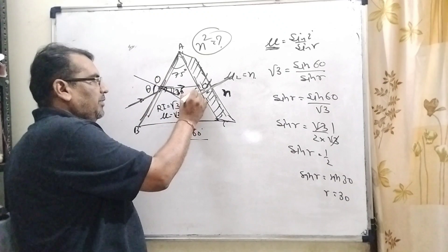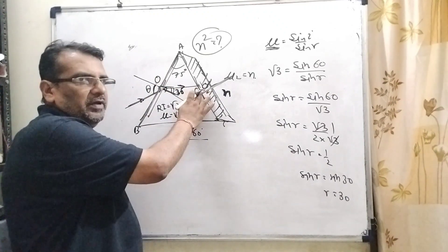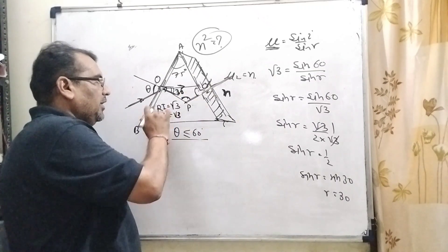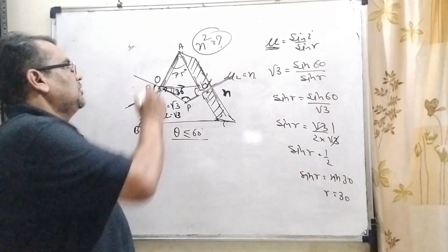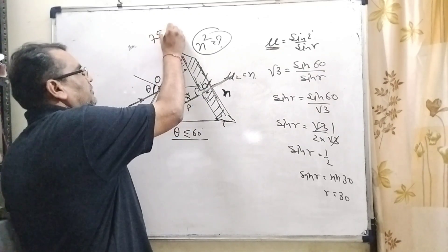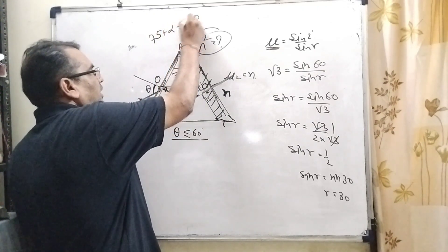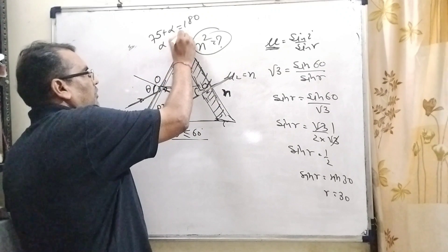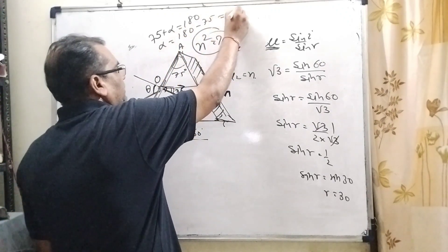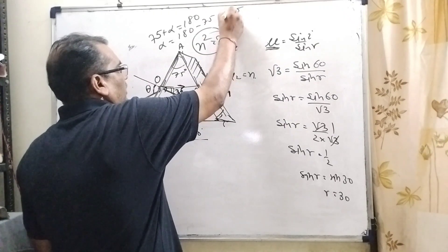Because these two normals make angle 90, 90, that is 180. So remaining angle 75 and this angle become 180 degrees. So here 75, let us consider alpha equal to 180 degrees. Then alpha equals 180 minus 75, that is 105.